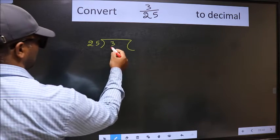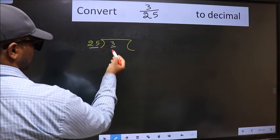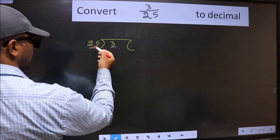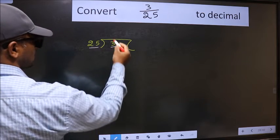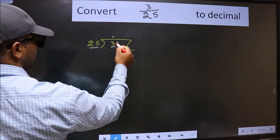Here we have 3 and here 25. 3 is smaller than 25. So, what we should do is, we should put dot and take 0.